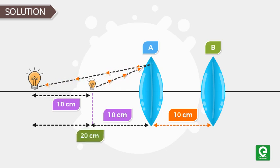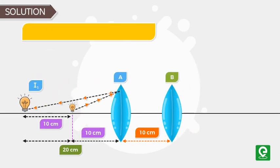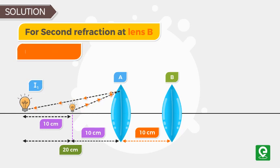This will be the first image I1, which means that the light will be refracted in such a manner that for lens B it appears to be coming from this position I1. And this will be the first image produced by lens A which is virtual in nature.